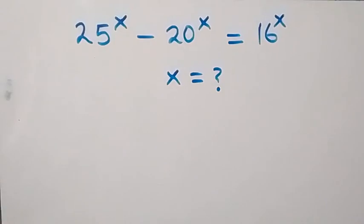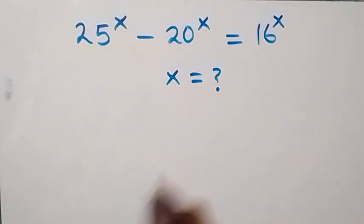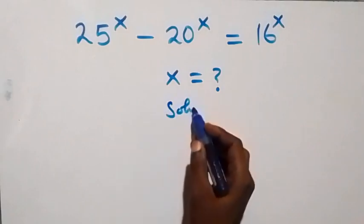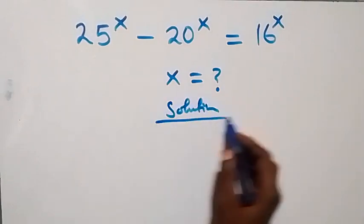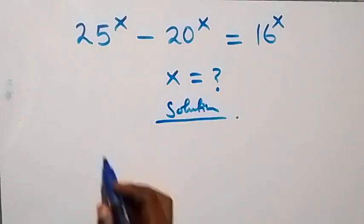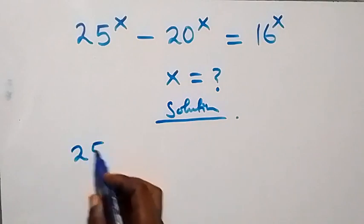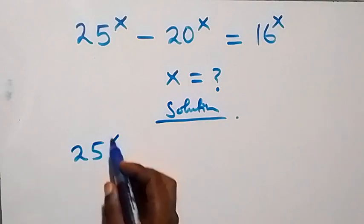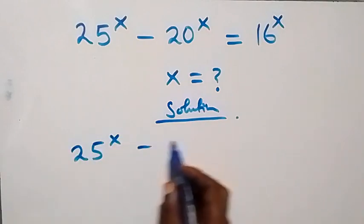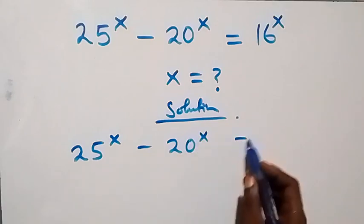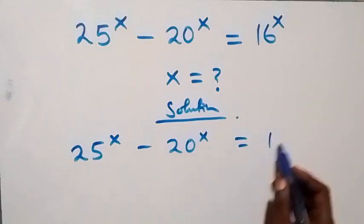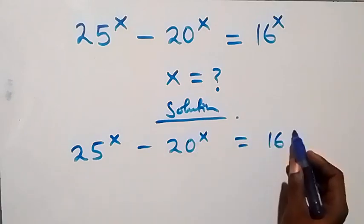Hello, you are welcome. How to solve for x in this nice exponential equation. From what is given, we have 25 raised to power x minus 20 raised to power x equals to 16 raised to power x.